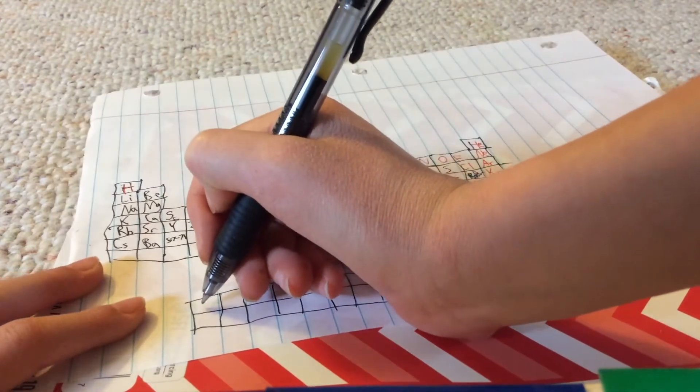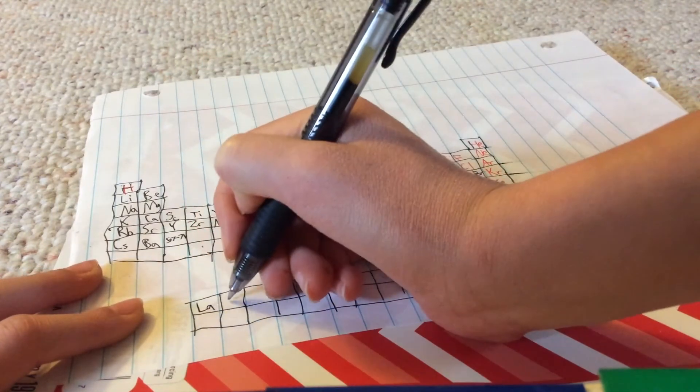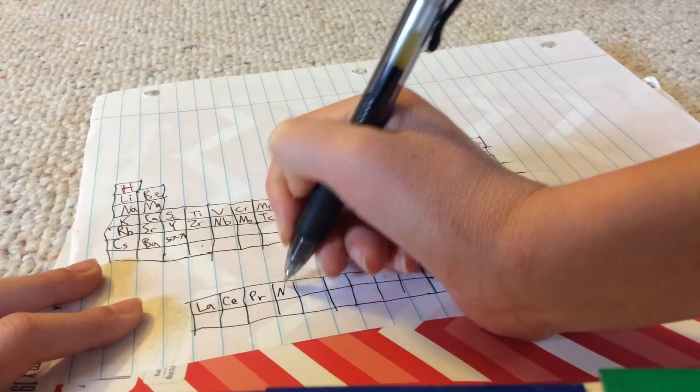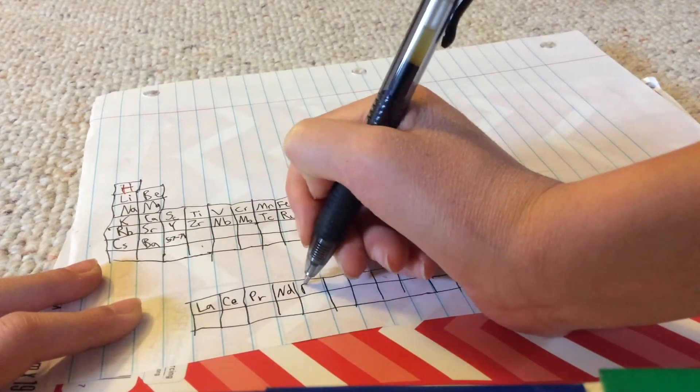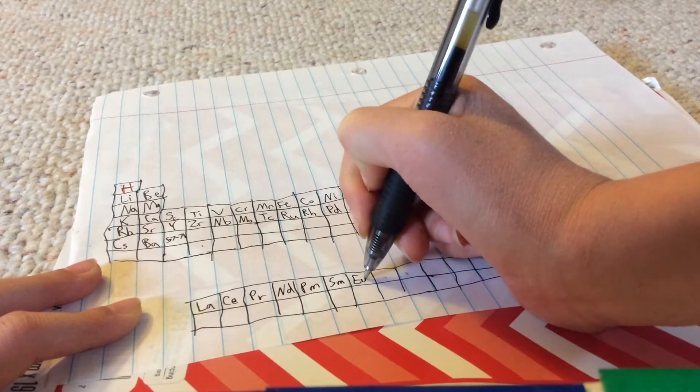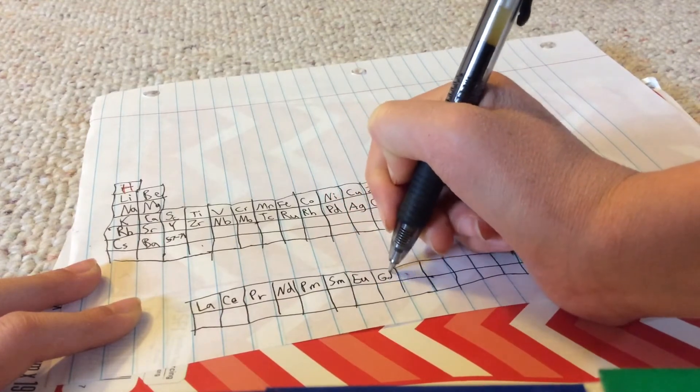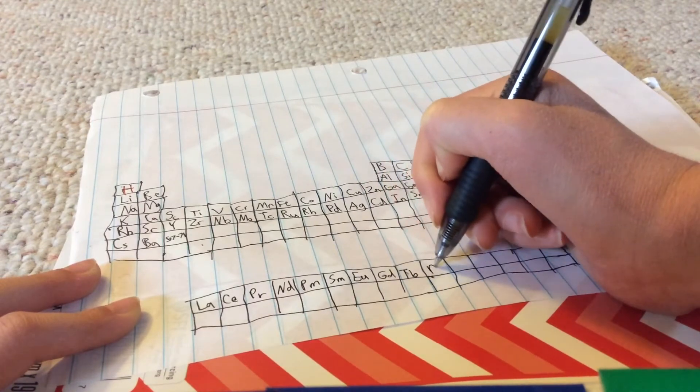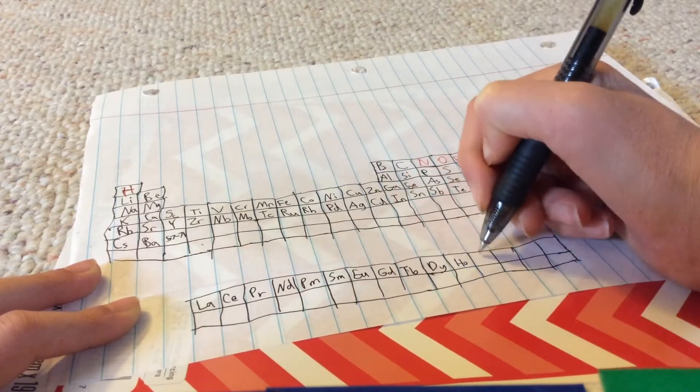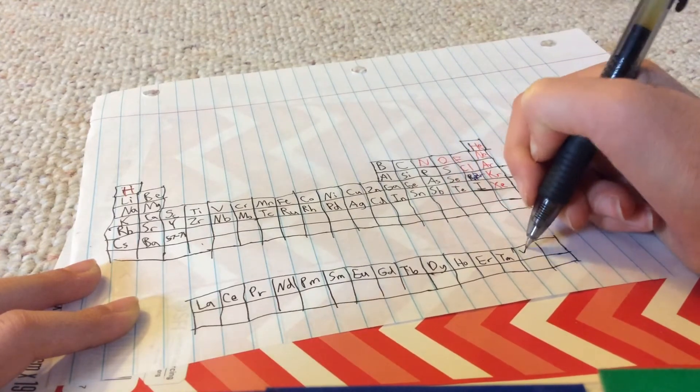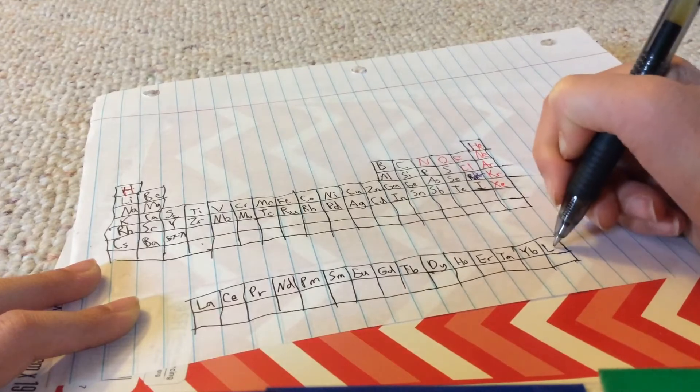There's lanthanum, cerium, praseodymium, neodymium, promethium, samarium, europium, gadolinium, terbium, dysprosium, holmium, erbium, thulium, ytterbium, lutetium. Now those are all the lanthanoids, which I'll be labeling afterwards.